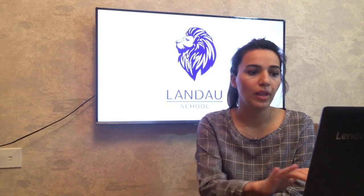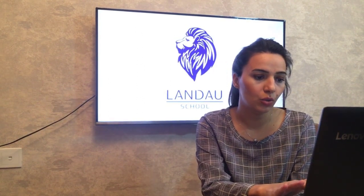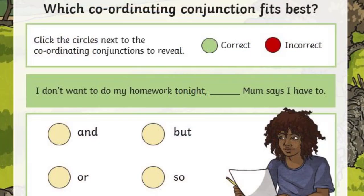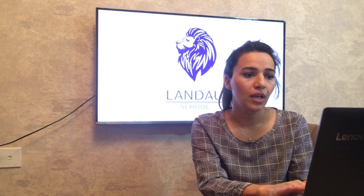Now let's move on to another activity — a short test about conjunctions. Circle the correct answer. First example: 'I don't want to do my homework tonight, __ mom says I have to.' The correct answer is 'but' — 'I do not want to do my homework tonight but my mom says I have to.' Let's move on to the next one.